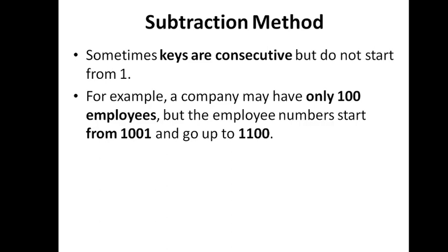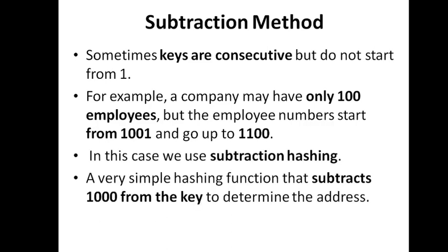The simple solution: subtract 1000 from every key and use the remainder as the address. For example, to store key 1010, subtract 1000 to get address 10. This compresses the address range from 1001–1100 down to 1–100. The subtraction method solves the problem of non-consecutive keys starting from a large offset.